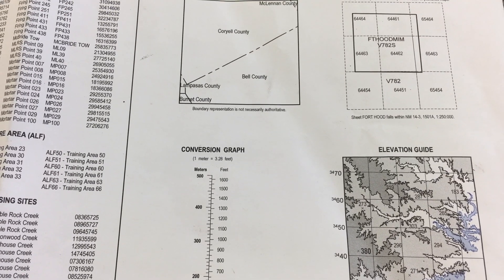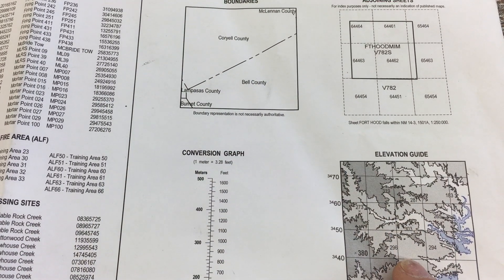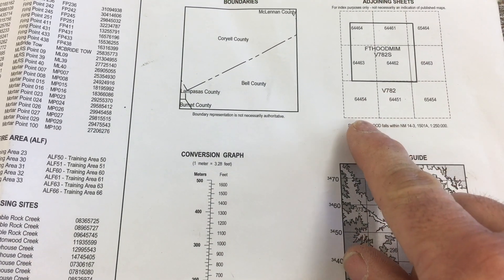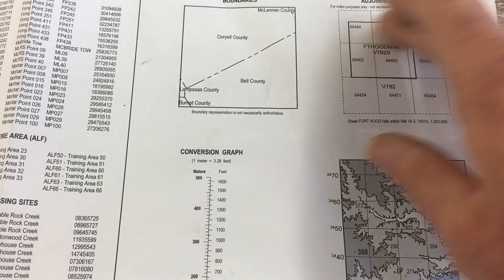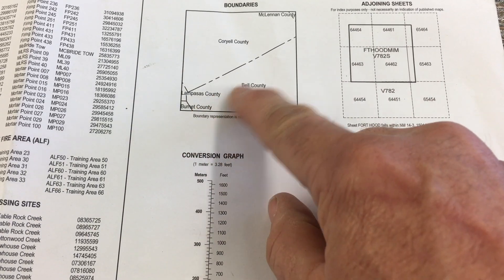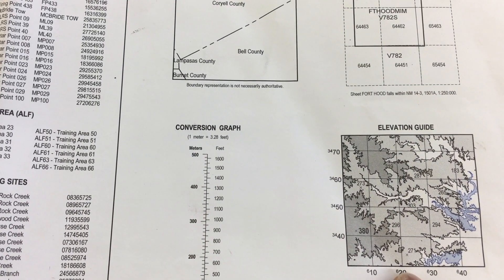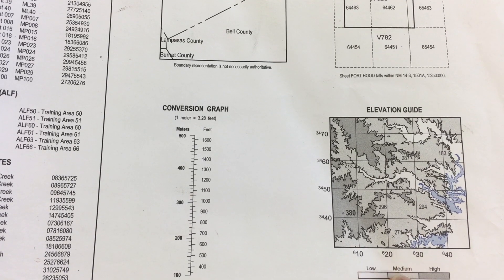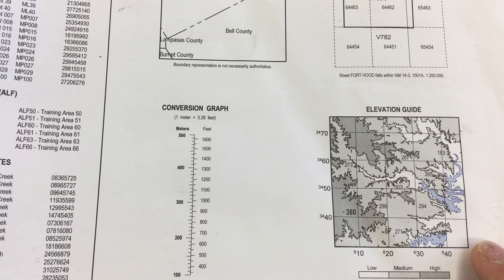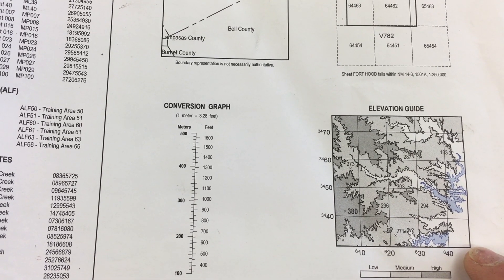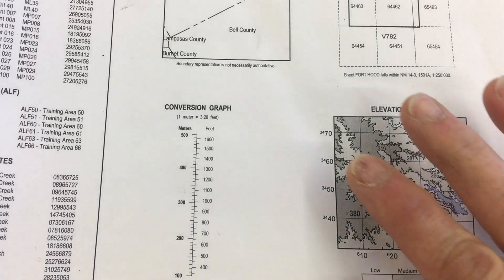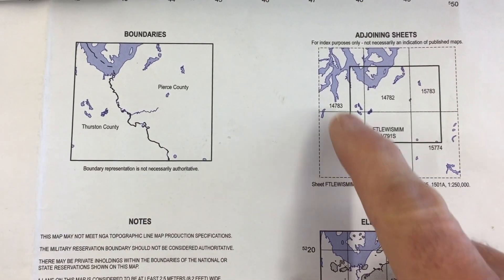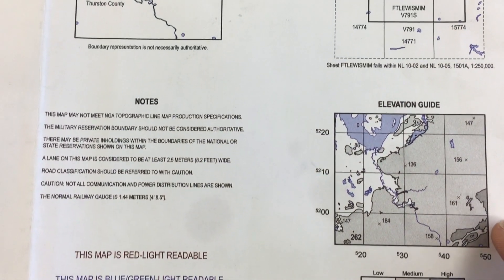We're going to start with a couple different boxes on the bottom. One is boundaries and joining sheets, and the other is an elevation guide. These are quick references that cartographers give us — to find other sheets or maps that join this one, identify major boundaries like county lines, and understand the general slope of elevation change. On the Texas map, the southeast corner is lower elevation, rising toward the northwest. The Washington map shows the same format, with Thurston and Pierce County boundaries and all adjoining sheets.